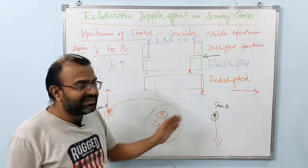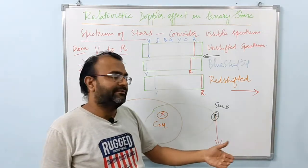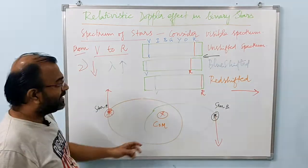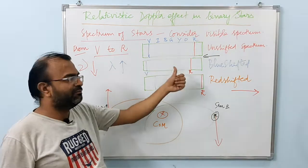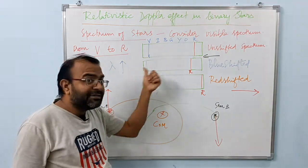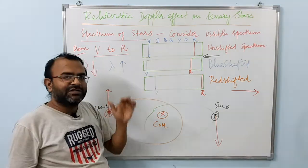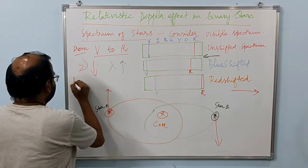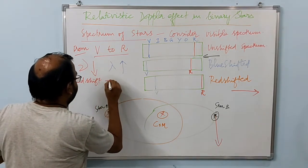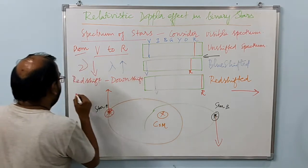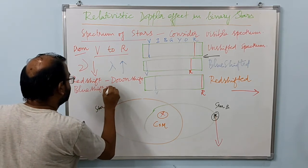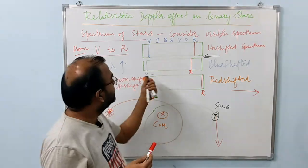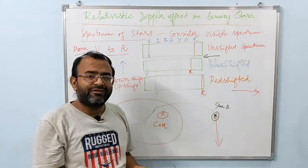Red shifting means down shifting — going to the lower end of the frequency spectrum. For star A going away from us, its spectrum will be red shifted with respect to the unshifted spectrum. On the other hand, if star B is approaching towards us, its spectrum will be blue shifted, because blue shifting is towards the violet end of the spectrum, meaning up shifting or going towards larger frequency values. Red shift means down shifting of frequencies, and blue shift refers to up shifting frequencies — the spectrum moves towards the higher frequency side. The left side is the higher frequency side and the right side, towards the red end, is the lower frequency side.